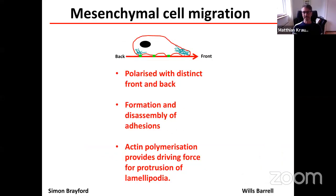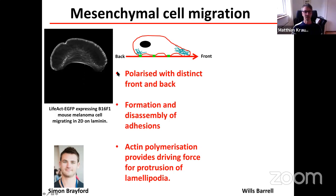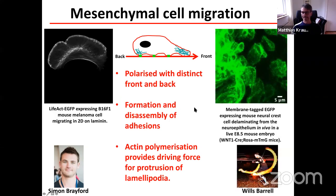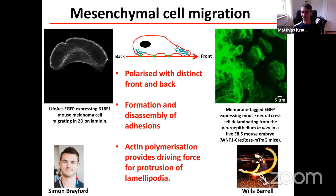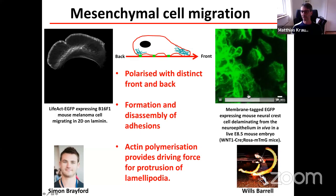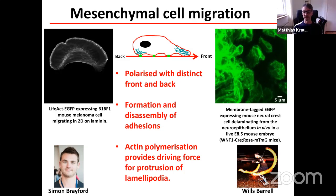For the remainder of the talk we will focus on mesenchymal cell migration. In this mode, cells are polarized with a distinct front and back. At the front, the extending membrane protrusion is called a lamellipodium. Underneath the lamellipodium, adhesions with extracellular matrix form, and at the back of the cell they are disassembled, allowing cell translocation to occur. These lamellipodia can be observed in 2D in live GFP-expressing B16F1 melanoma cells migrating on laminin, but we also can observe them in 3D — a postdoc in the lab imaged membrane-tagged GFP-expressing mouse neural crest cells delaminating from the neural epithelium in vivo in a live E8.5 mouse embryo.